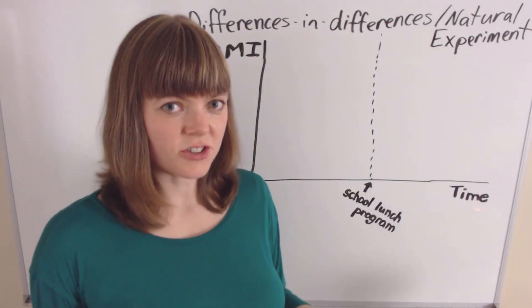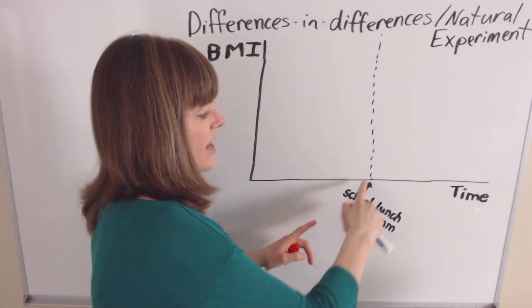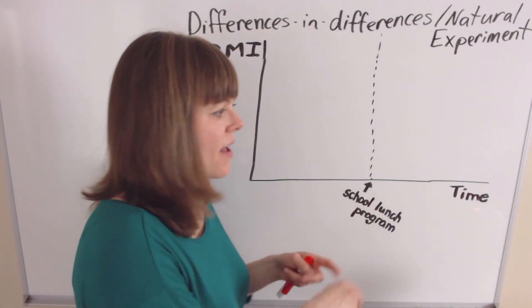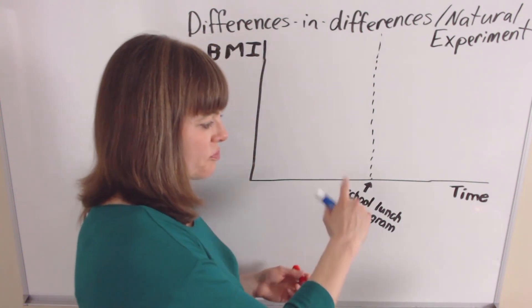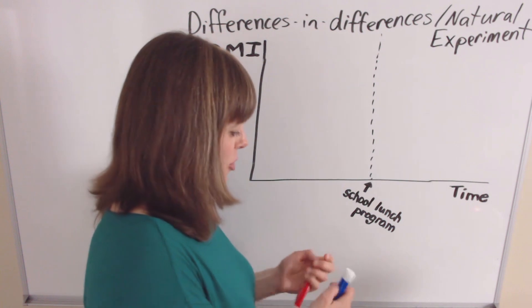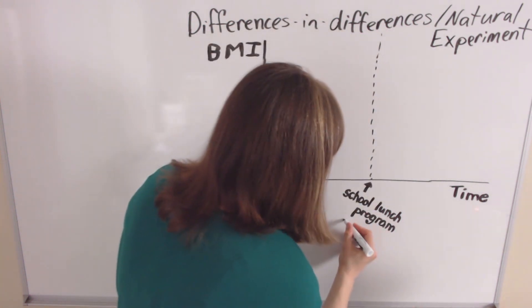Now the key with a natural experiment is that we're looking at something that changes at a specific point in time. I'm making up this example for fun, but imagine that we implement a school lunch program at some particular point in time, call this 2006.